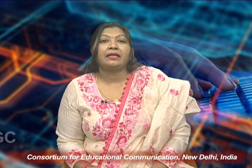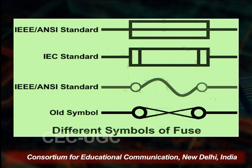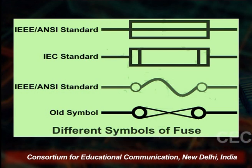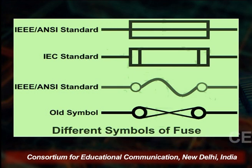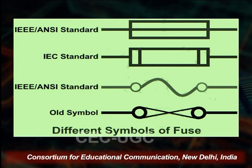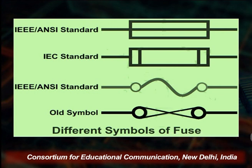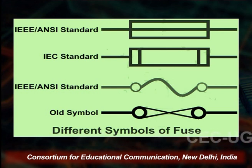You can see the schematic diagram of the fuse on the screen. In ANSI/IEEE standards, the fuse is represented by a box with a line. In IEC standard, a different symbol is used. The old symbol is also shown at the bottom for reference. Presently, the first symbol is used to represent the fuse.